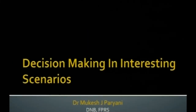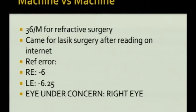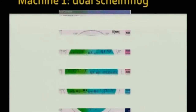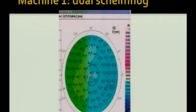My first case I call 'machine versus machine.' A 36-year-old male came for refractive surgery after reading a lot on the internet; refractive error was minus 6 and minus 6.25. A dual Scheimpflug image showed keratometric values within normal, but there were some irregularities. Repeated scans showed posterior elevation, while the rest of all other parameters were absolutely normal.